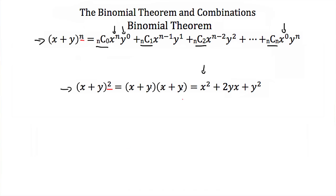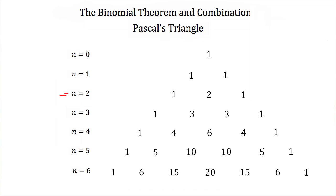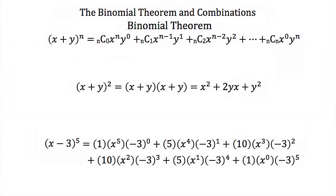In that case n was 2, so the first term has x to the 2, the last term has y to the 2, and the middle has x and y each to the first power. The coefficients 1, 2, and 1 match Pascal's triangle row for n equals 2. That was a simple FOIL into a quadratic equation, but what if you had a harder problem?